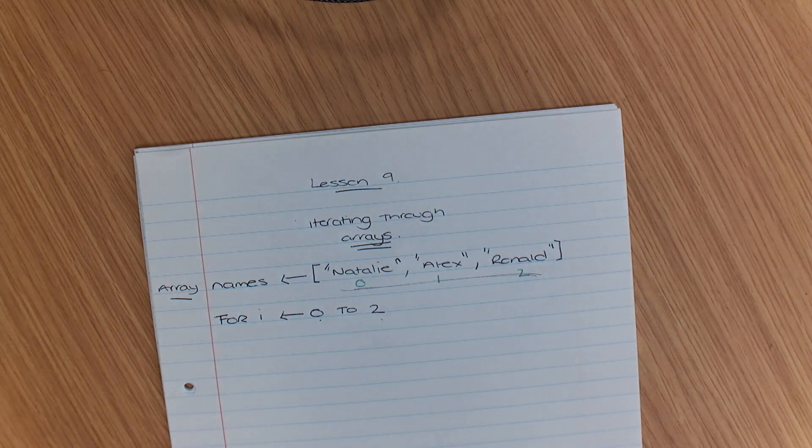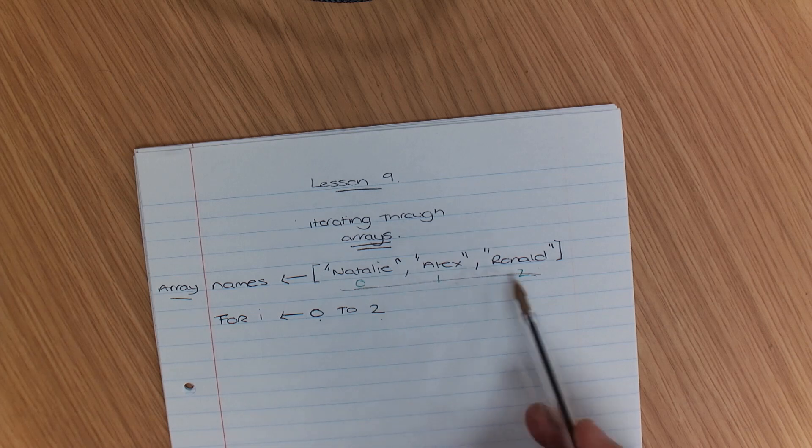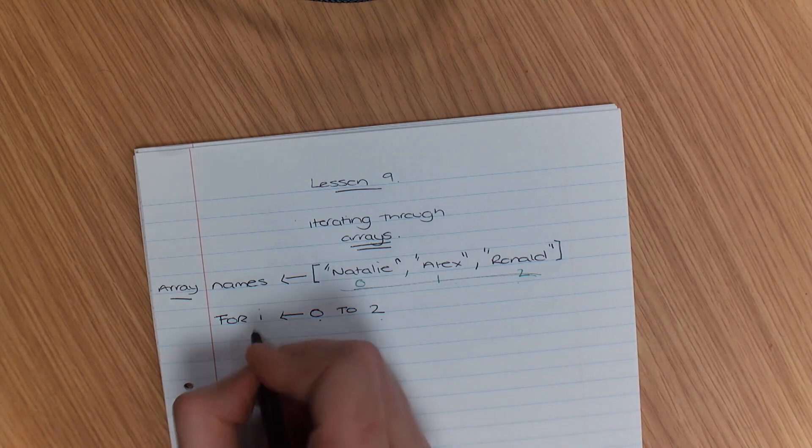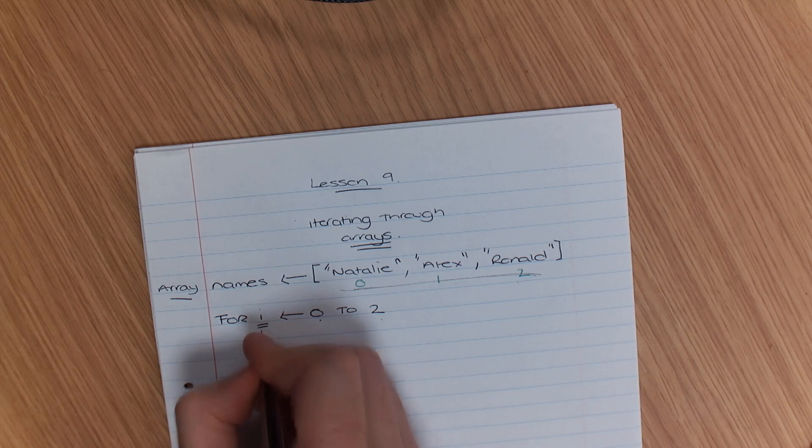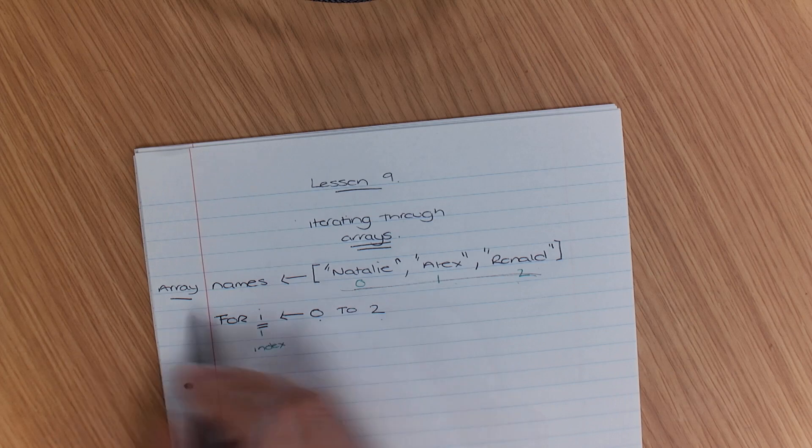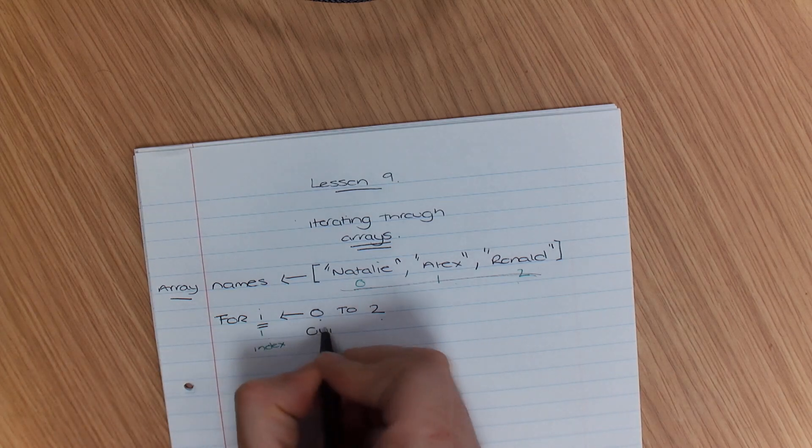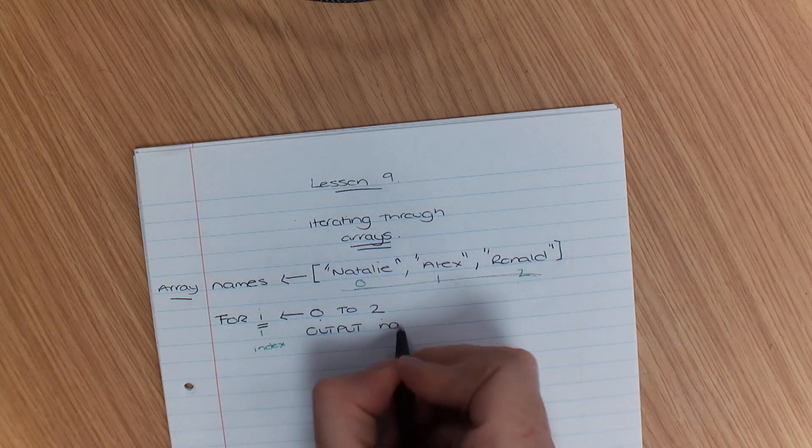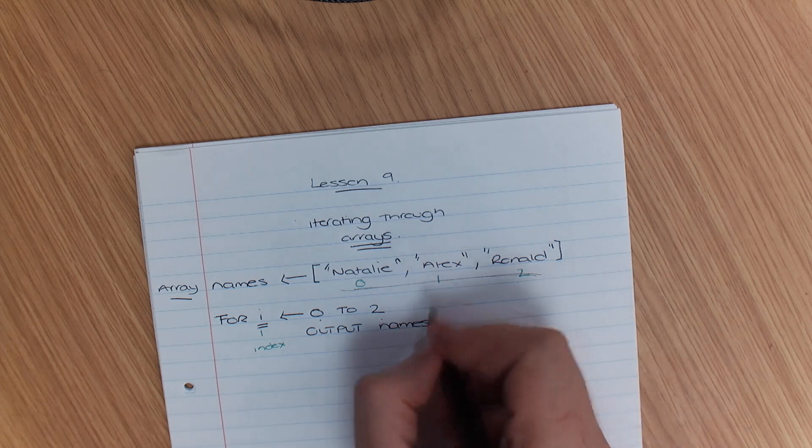So I've looked at previous exam papers and I've looked at how we structure this and we start 0, 1, 2. Now the key thing to remember here is you're going to use this i as our index. So this is going to be our index. Now what I'm going to do as part of this indentation here is I am going to output names and here's where the clever bit comes in I can put in i.